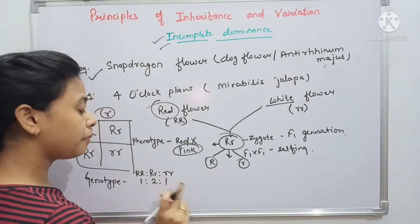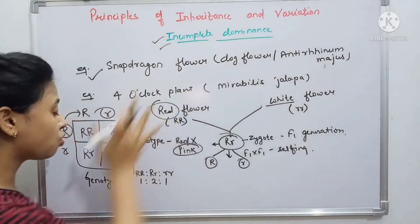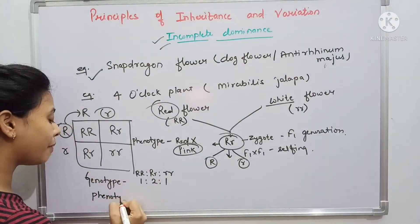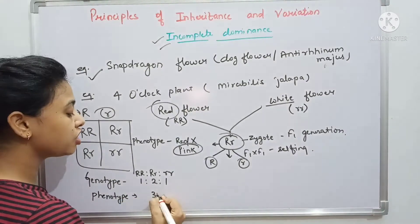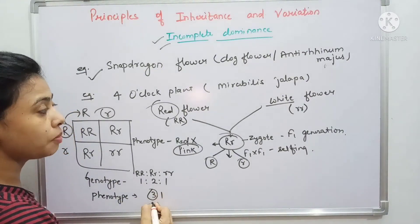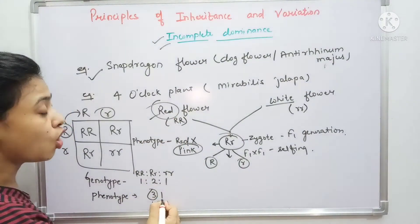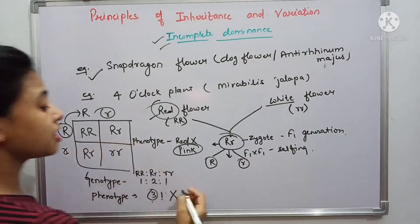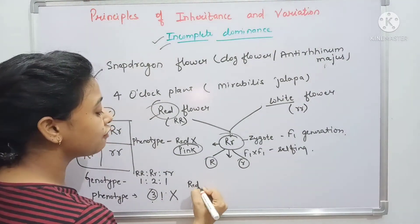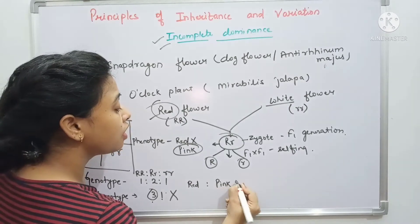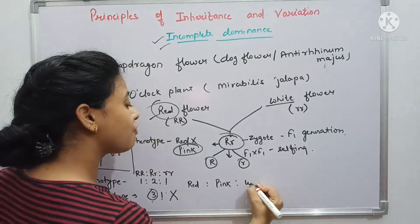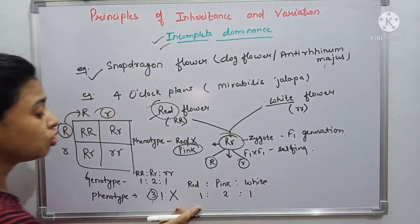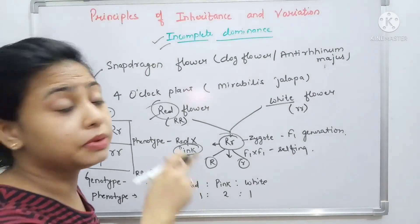In law of dominance, the phenotypic ratio would be 3:1 — three red flowers and one white flower. But in incomplete dominance, this does not match. Here the phenotypic condition gives us red flower, pink flower, and white flower. So the genotypic ratio and phenotypic ratio are both 1:2:1 in incomplete dominance.